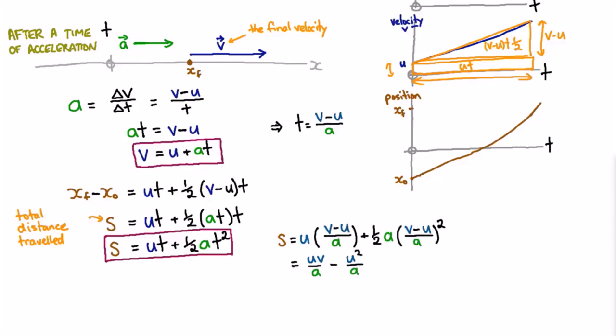We just expand out the first bracket and then the second bracket. Then we note that that term cancels with that term, and this term half cancels with that term. We've got two things left.